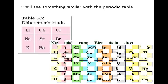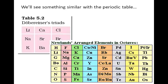John Newlands arranged elements that were known at the time in order of increasing atomic mass. He noticed that the properties of the eighth element were like that of the first element — for example, lithium's properties are similar to hydrogen's. He called this the Law of Octaves, the repeating pattern of every eighth element. This eventually highlighted the concept of periodicity, meaning that periodically we're going to see a repeating of elements.